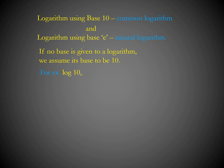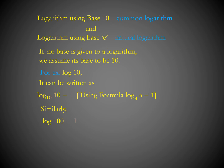For example, if we have log 10 with no base given, we assume its base to be 10. So it is log 10 to the base 10, which equals 1 using the formula log A to the base A equals 1. Similarly, log 100 is log 100 to the base 10. Since 100 = 10², the power 2 comes in front: 2 log 10 to the base 10 = 2 × 1 = 2.